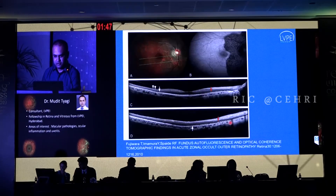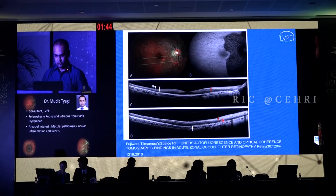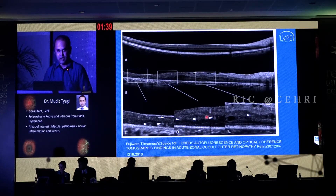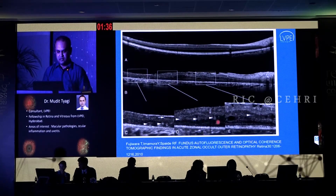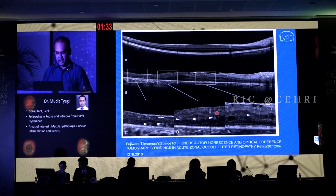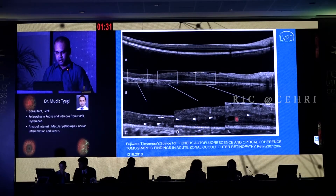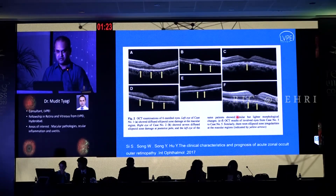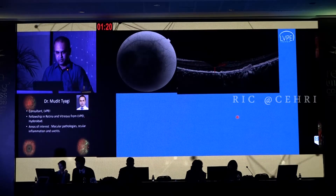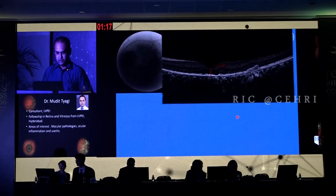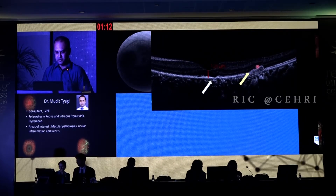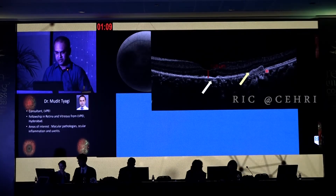Dr. Spaide's group came up with a very nice paper describing not only photoreceptor damage but also hyperreflective dots. Hyperreflective dots are basically an indicator of inflammation — they showed these hyperreflective bands and also a few cystoid changes in patients with AZOOR. Another report showed loss of ellipsoid zone and changes at the level of the photoreceptor. This is another one of our patients where you see this area of photoreceptor damage and also some drusenoid deposition in this area.